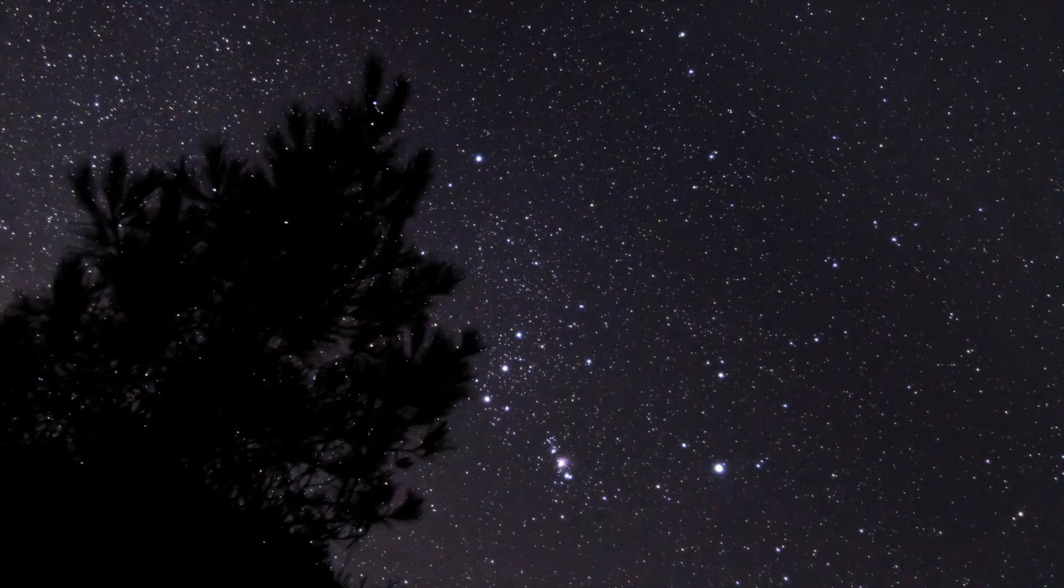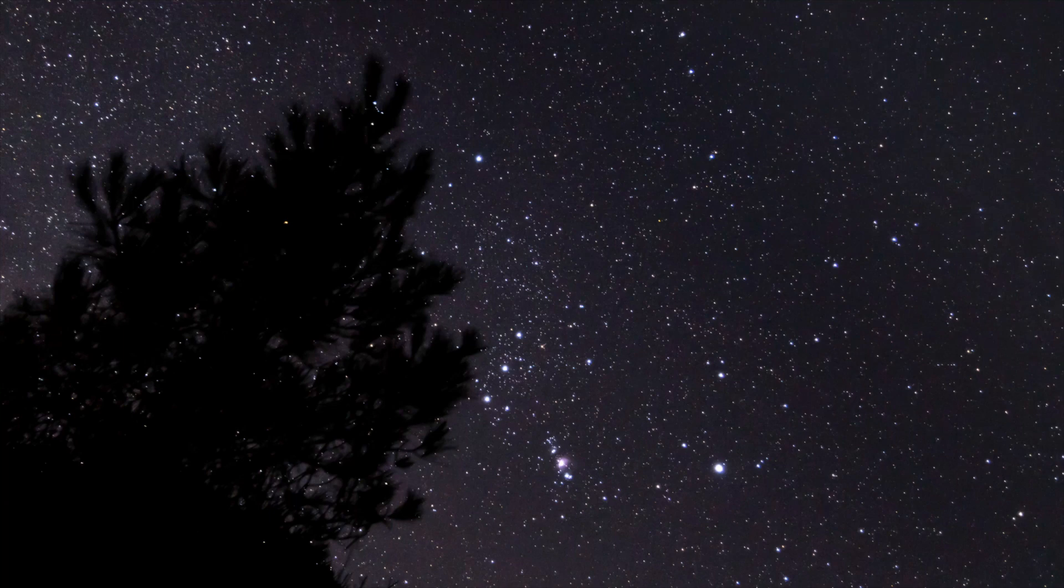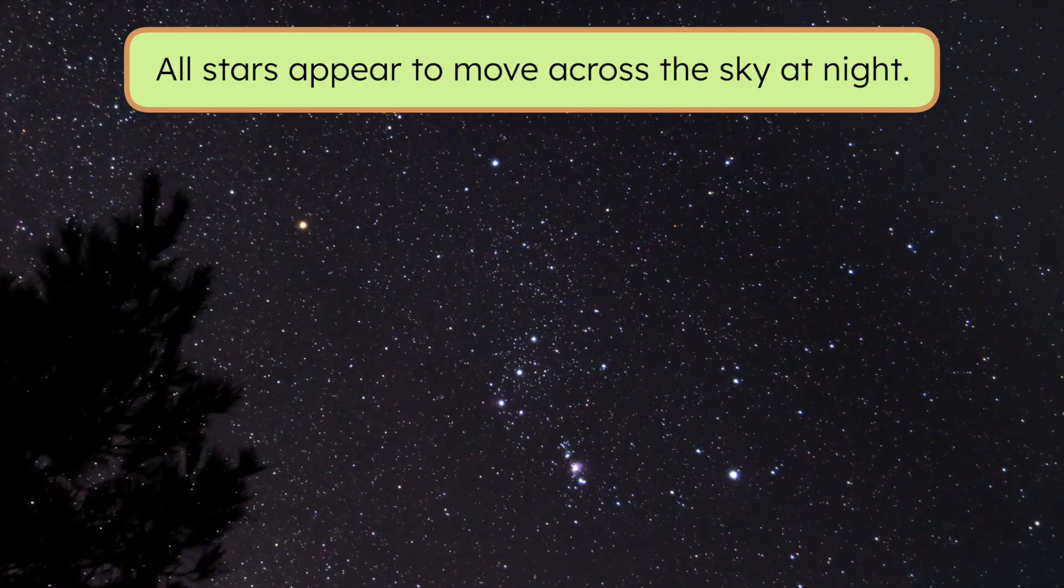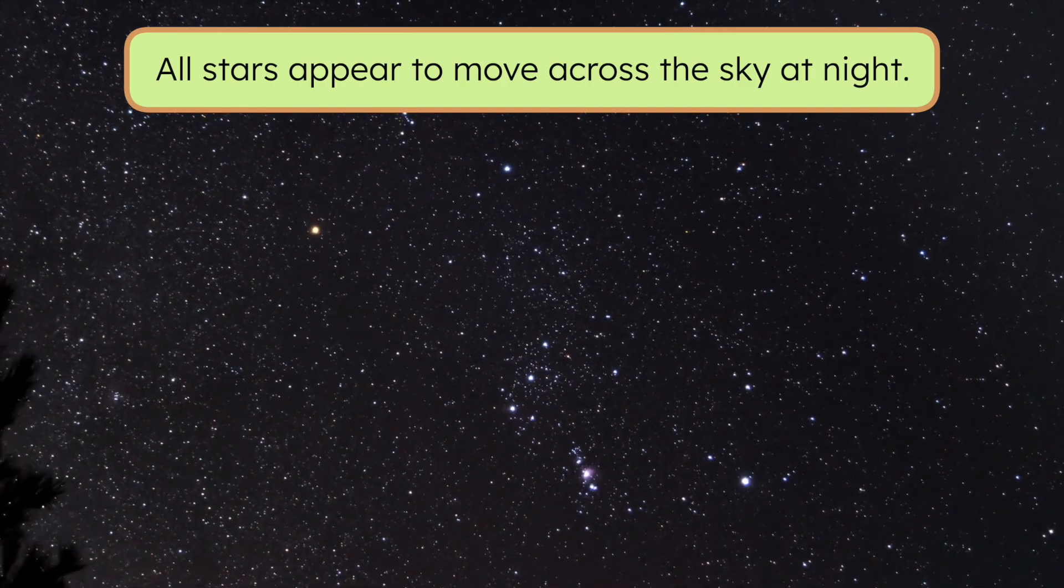But people noticed one more thing. Take a look at this picture. It shows the constellation Orion in the night sky. Now, look at this second picture, taken just a few hours later. What do you notice? Pause the video and record your thoughts in your guided notes. The constellation moved during the night. The stars and the constellation seem to move together, keeping their shape. All stars appear to move across the sky at night. But why does it look that way?